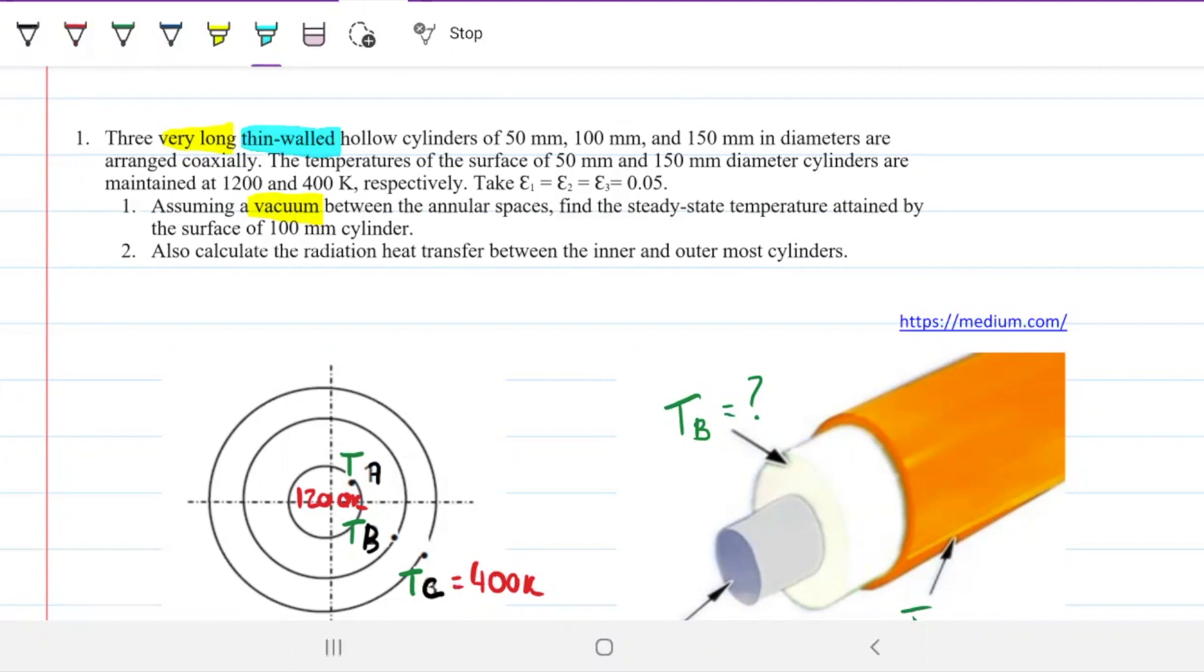But a thin walled cylinder, we know that the thermal resistance due to conduction is dependent on the thickness of the cylinder. So a thin walled one is one that pretty much will have little to no conductive resistance.